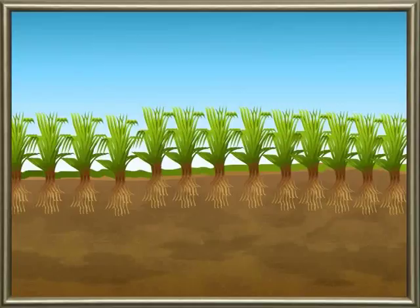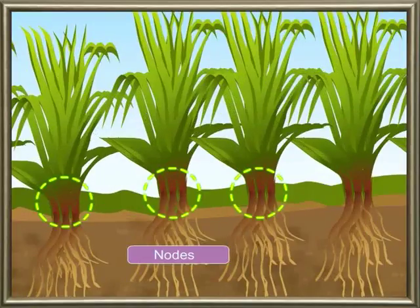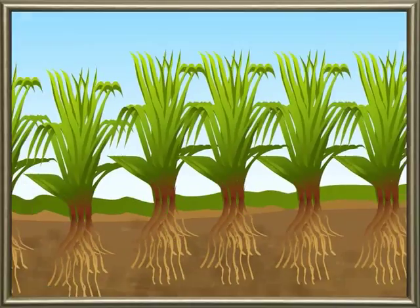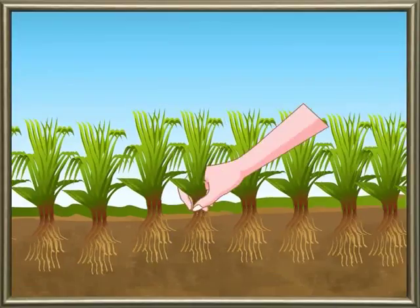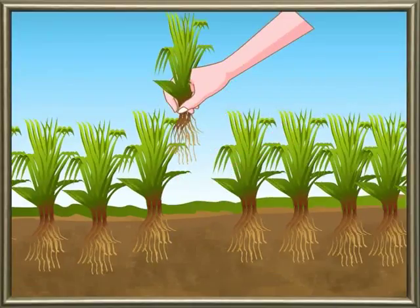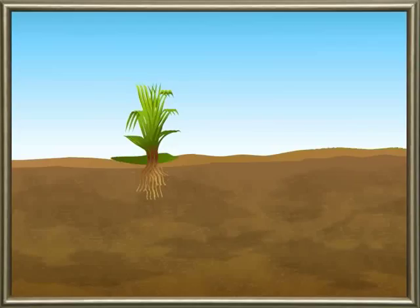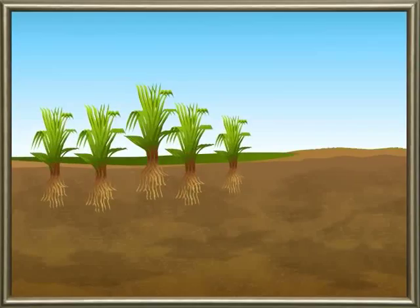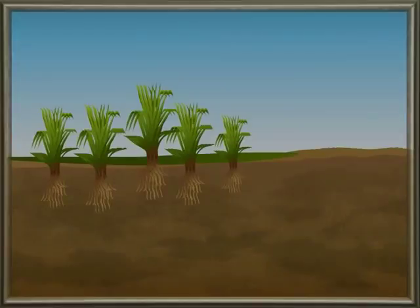Some plants like grass spread on the ground, and we find a bunch of roots at each node. If a part of the stem of such a plant along with roots is cut and planted in the soil, it grows into a new plant. Many types of grasses multiply vegetatively. From this lesson, we have learned how vegetative propagation takes place in plants.